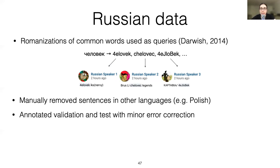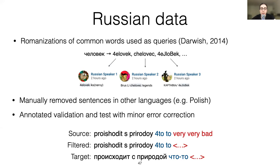The validation and test portions of the data were manually annotated by two native speakers. The training portion we didn't annotate because our approach is unsupervised. The annotators removed all foreign words and all other words for which they don't have a standard Cyrillic spelling in mind — shown in red. Then they manually converted the rest to Cyrillic and corrected what they perceived as minor misspellings, like the hyphenation shown in blue. This kind of correction is a sensitive matter.